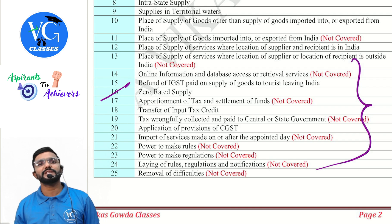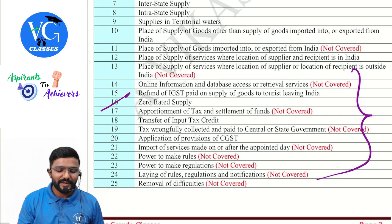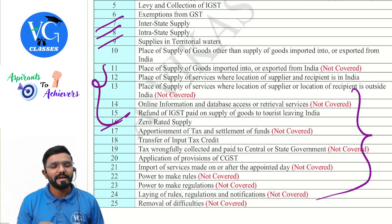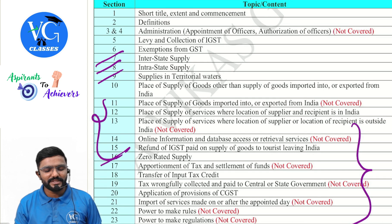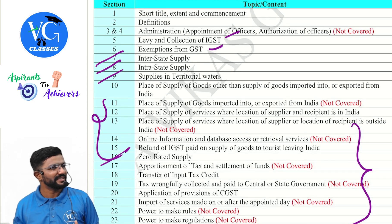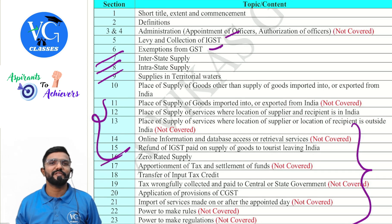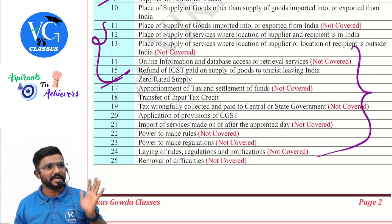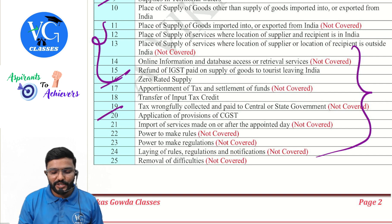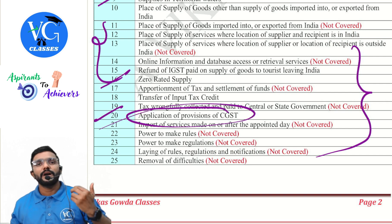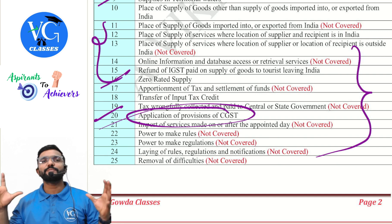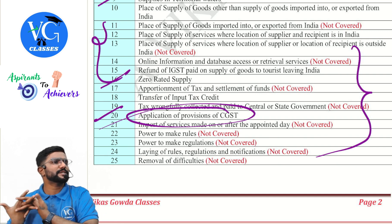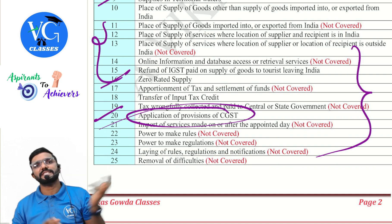What is covered in your syllabus from the IGST Act is only the place of supply provisions and concepts of supply — that is inter, intra, and supply in territorial waters. Whereas exemptions and levy are actually covered but are a copy-paste of CGST Act provisions with minor changes. Section 20 of IGST Act states that if there is no separate provision covered under IGST for any topic, then it applies mutatis mutandis as covered in the CGST Act.